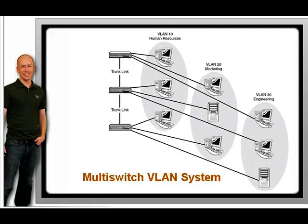VLANs provide an additional layer of security. No device in any VLAN can communicate with a device in any other VLAN until you deliberately configure a way for it to do so. An example might be a server in VLAN 10 that holds sensitive employee files for HR. No PCs from other VLANs can access VLAN 10 or the server in it unless you specifically configure it to do so.